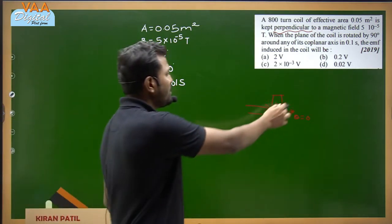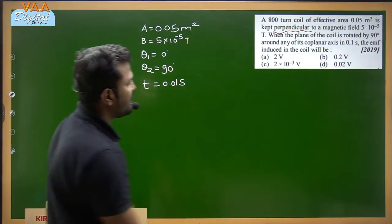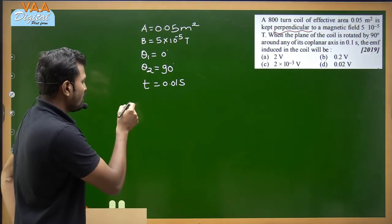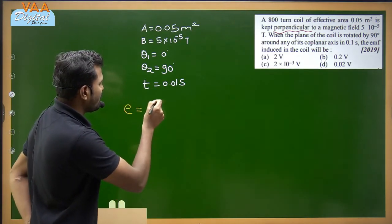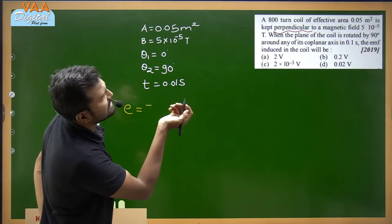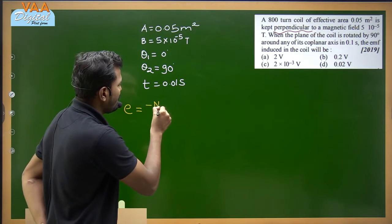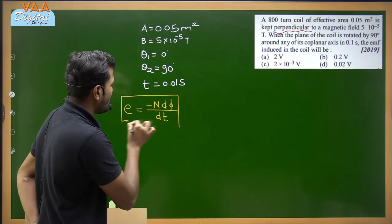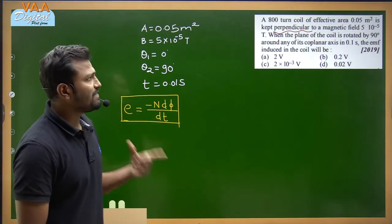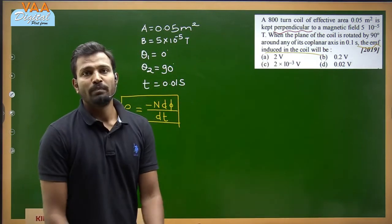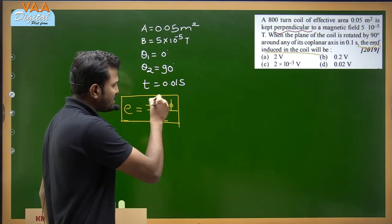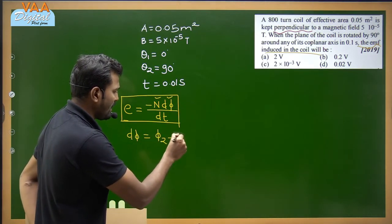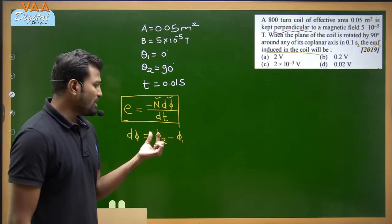To find the induced EMF, we use EMF = −N dΦ/dt, where N = 800. First I need to find dΦ, which is the final flux minus the initial flux. The final flux Φ₂ = NBA cos θ₂, where θ₂ = 90°, so cos 90° = 0, giving Φ₂ = 0.